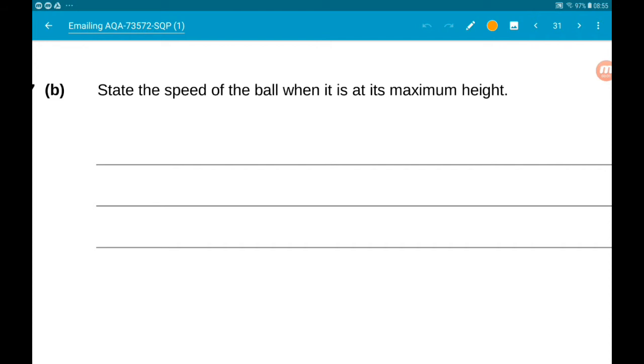Okay, then part b wants us to state the speed of the ball when it is at its maximum height. When it's at the maximum height, that point is a stationary point, so at that point our vertical velocity is zero. We know that our horizontal velocity is constant at 16 because there's no resistance forces. So our speed at the maximum height is just the horizontal velocity, so just 16 meters per second.